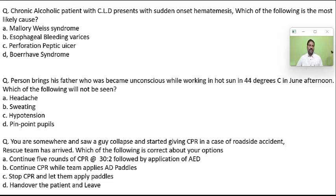A chronic alcoholic with chronic liver disease and sudden onset hematemesis — most probably there are varices that have developed in his esophagus. A person brings his father who has become unconscious while working in hot sun at 44 degrees — most probably it is a heat stroke.